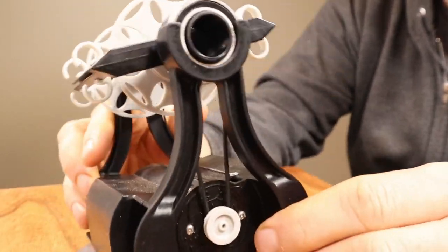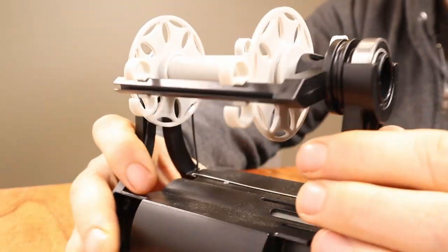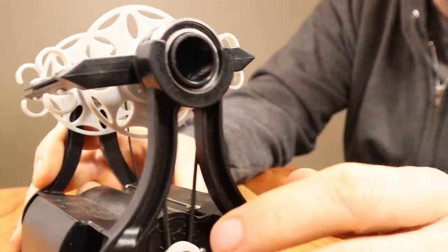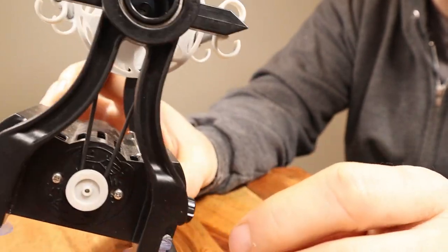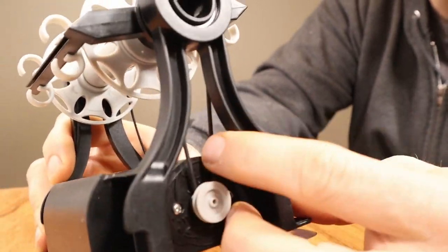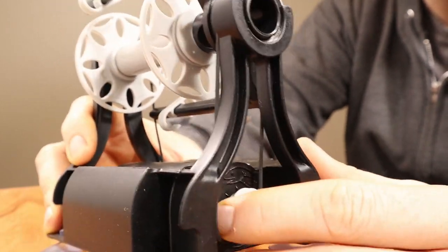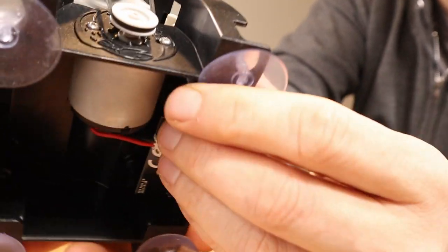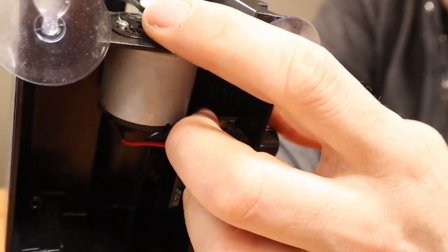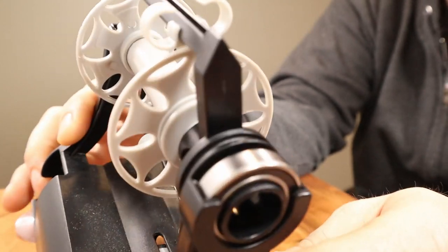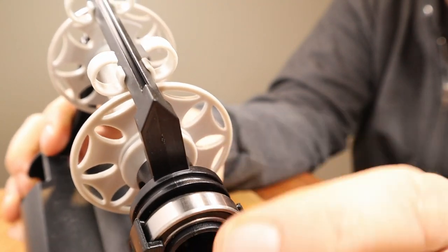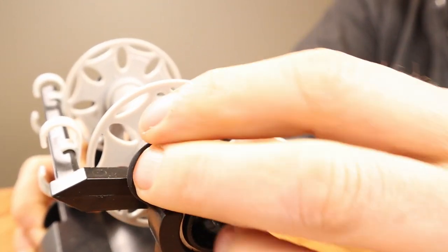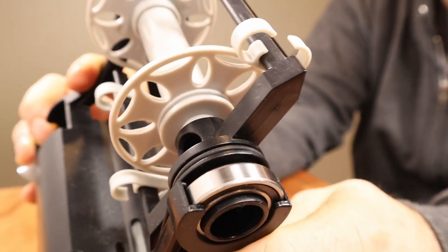Another issue that people have had is that the drive belt, which goes from the motor down here up to the flyer, is not installed correctly on some people's. On this one in particular, it's not installed correctly, so you need to make sure that it's in the groove of the pulley and the motor just like that. You want it in that groove there, and then up top you want it in the groove, not in front of the groove like it is right now. You just need to get it into the groove of the flyer like that.